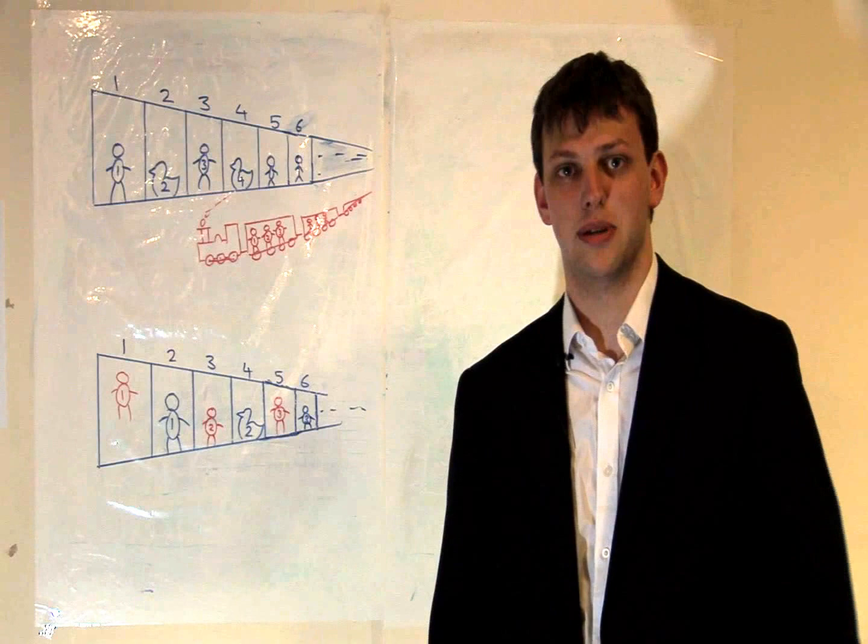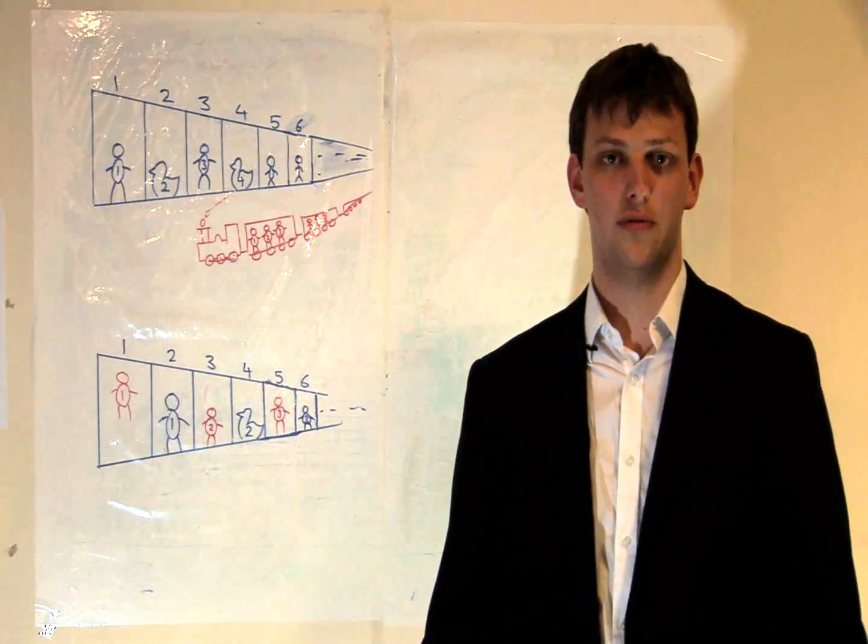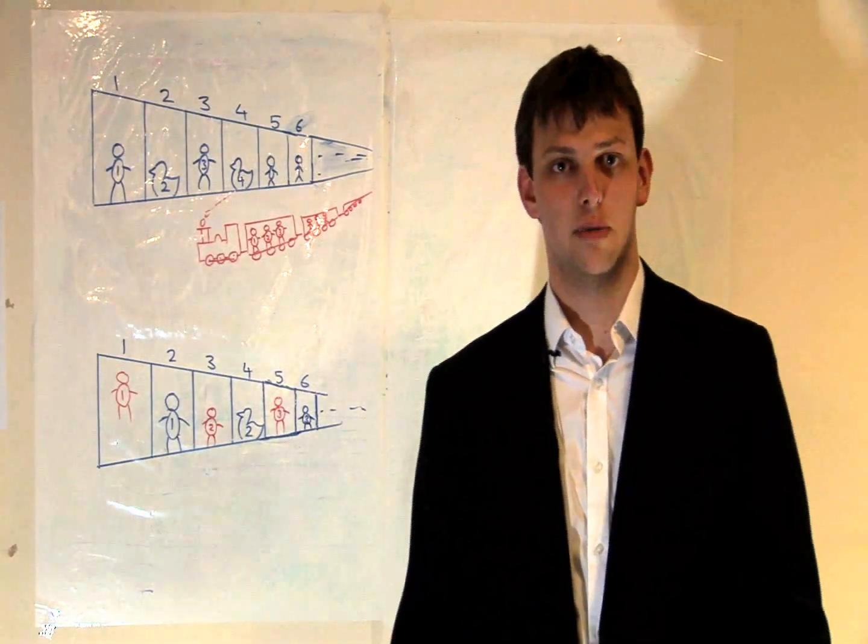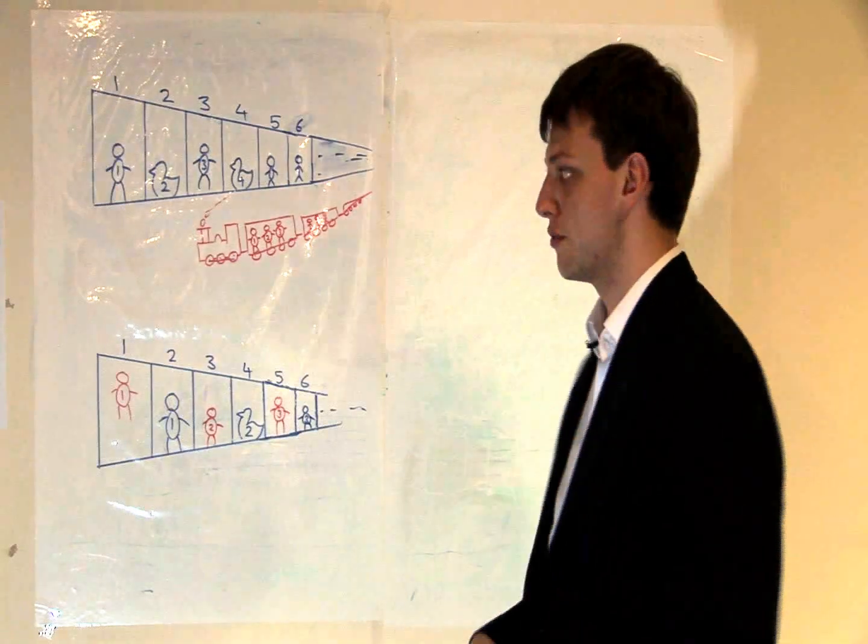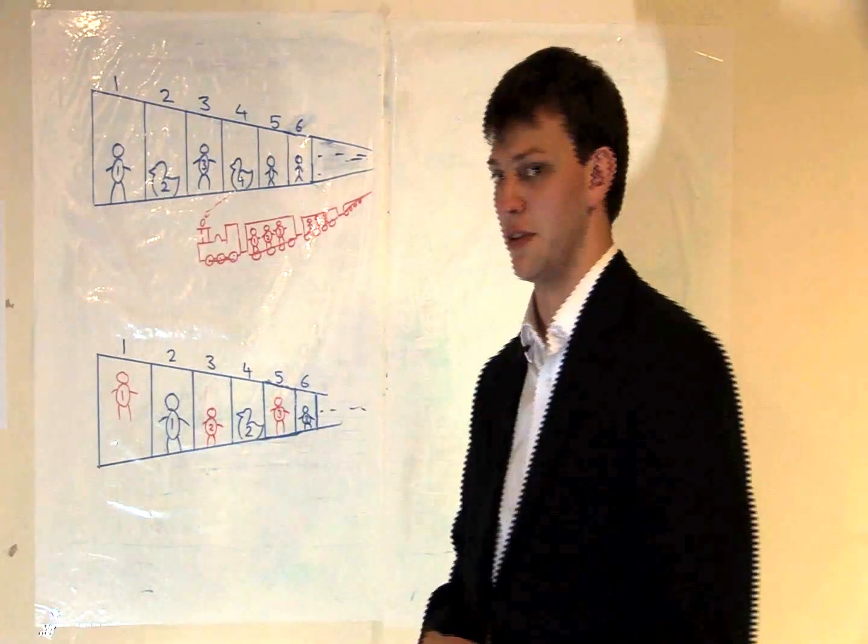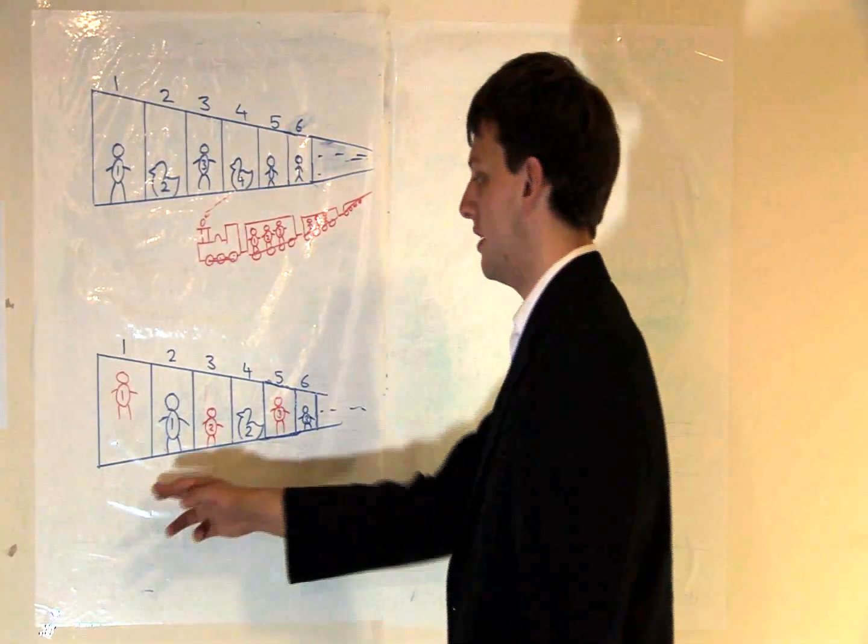Well, if the manager goes on the public address system and asks everyone to move to the room with twice their current room number, then after an awful lot of walking, only the even numbered rooms will be filled, so we can put the trainload of people in the odd numbered rooms.